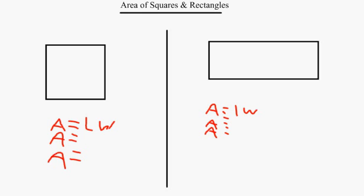For example, area equals length times width, area equals 5 times 6, area equals 30 meters squared.